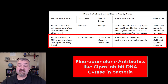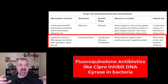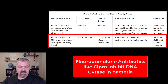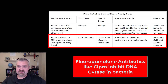DNA gyrase is an enzyme that bacteria use. As DNA is being unwound and replicated, it keeps these coils from forming that can cause DNA to break. That's not a huge deal, but it is different than ours — we use a different enzyme. So it is selectively toxic. It doesn't mean there aren't side effects, but it is selectively toxic for that enzyme.